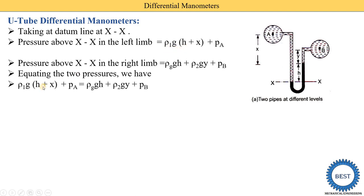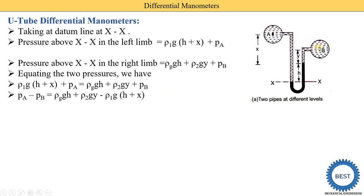So the equation is ρ1·G·(H + X) + PA equals pressure in the right limb, since pressure in both limbs is the same. We equate them: the right limb pressure is ρg·G·H + ρ2·G·Y + PB. Since differential manometers measure the pressure difference between point PA and PB, rearranging gives PA minus PB equals ρg·G·H + ρ2·G·Y minus ρ1·G·(H + X).